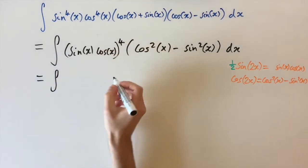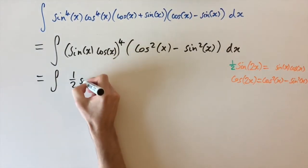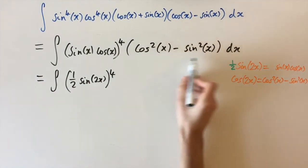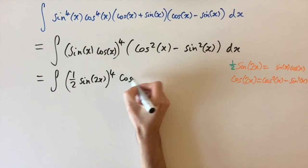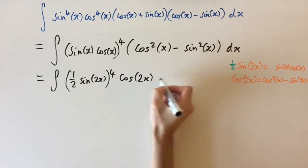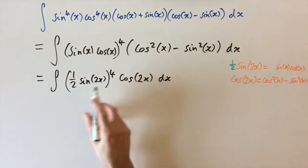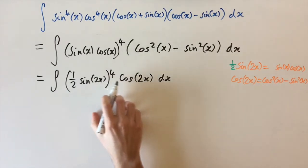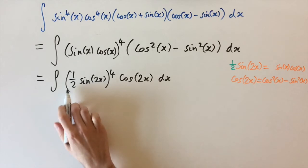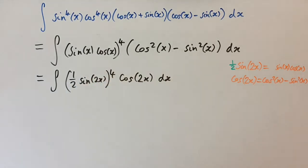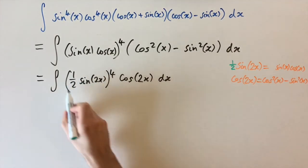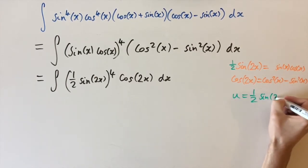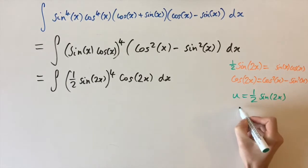So we have the integral of half times sine 2x, all to the power of 4, and then we replace the other term by cosine 2x dx. Now we have a sine term raised to a power with its derivative next to it, so we can actually integrate this. To make it simpler, we're going to use a substitution — we'll substitute this term, so let u equal to half sine 2x.